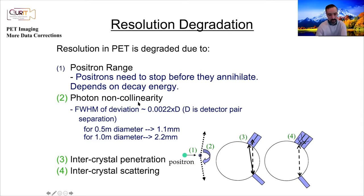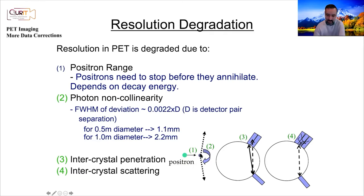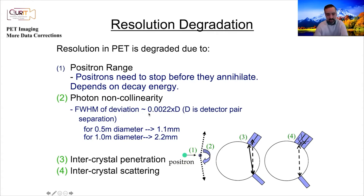Another cause is photon non-colinearity. The positron has momentum, and conservation of momentum means the two gamma rays can't be exactly at 180 degrees — they can be slightly bent. On average the deviation is only 0.25 degrees, but with a large diameter scanner this can add up to a couple of millimeters of blurring. There's a formula for this: the FWHM of blurring depends on the detector pair separation and the 0.25-degree deviation.